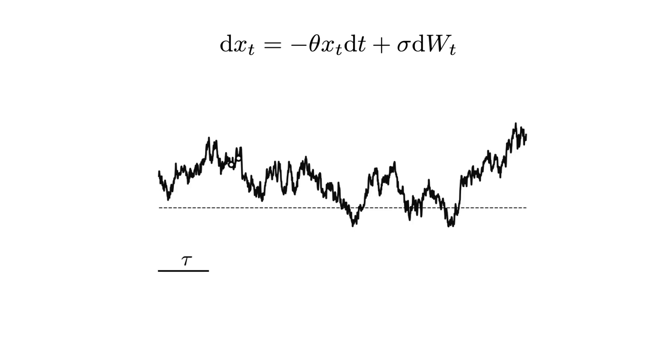Looking at the example trajectory, you can see that when the time difference is small compared to the characteristic timescale tau, the x values are highly similar. And as the time difference is increased, the two x values become less and less correlated.